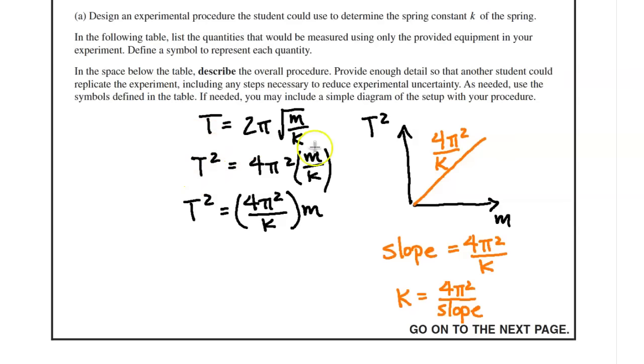So I'm going to first get rid of this square root. So I'm going to square both sides. So on the left-hand side, I get period squared is equal to, on the right-hand side, I'm going to square everything there. I get 4π² times m over k. Notice that square root is gone. And on the y-axis, I'm going to graph period squared. And then on the x-axis, I'm going to graph mass.